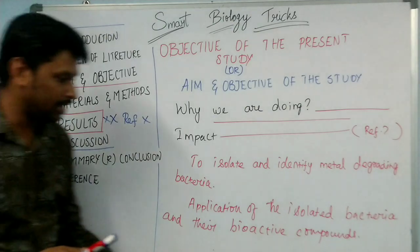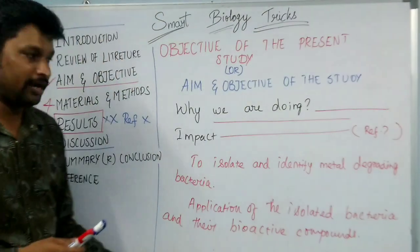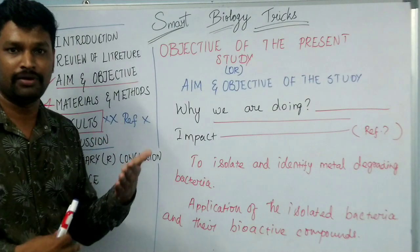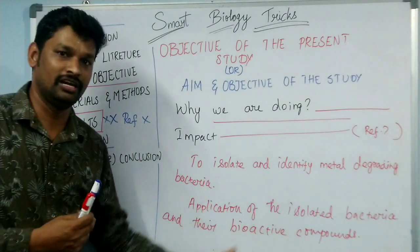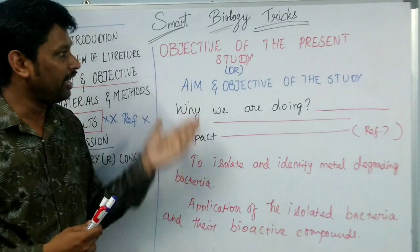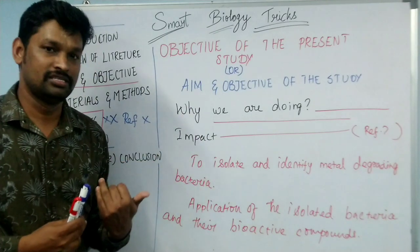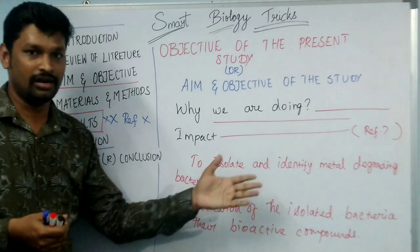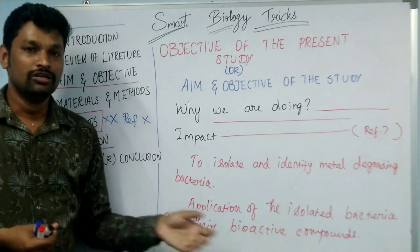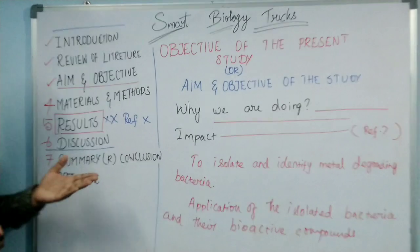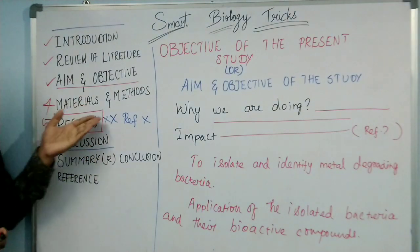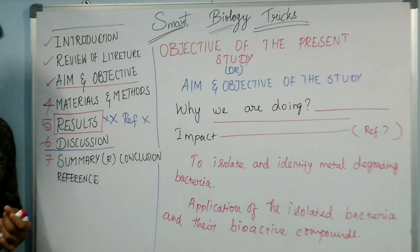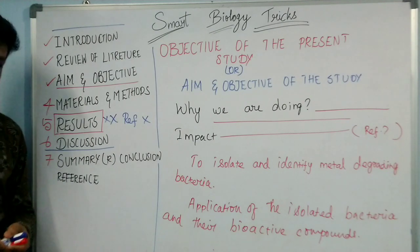So this is how you have to write the objective of the study. I hope the information mentioned in this class will be very useful for you. In the next class, we will discuss how to write materials and methods and then results. Thank you so much for watching. Keep watching Smart Biology Tricks. Stay tuned.